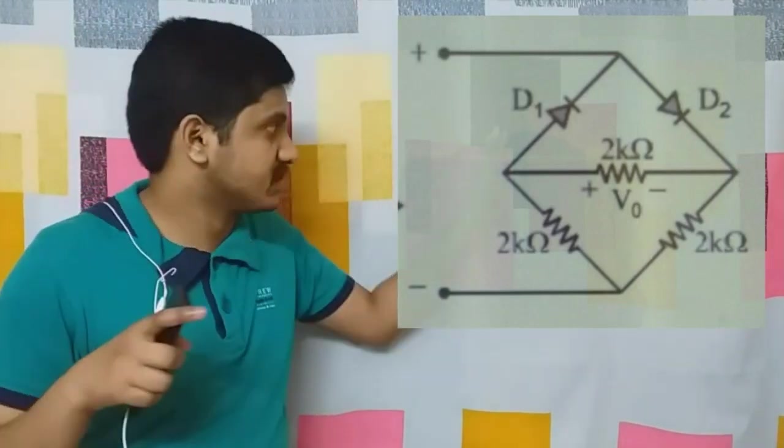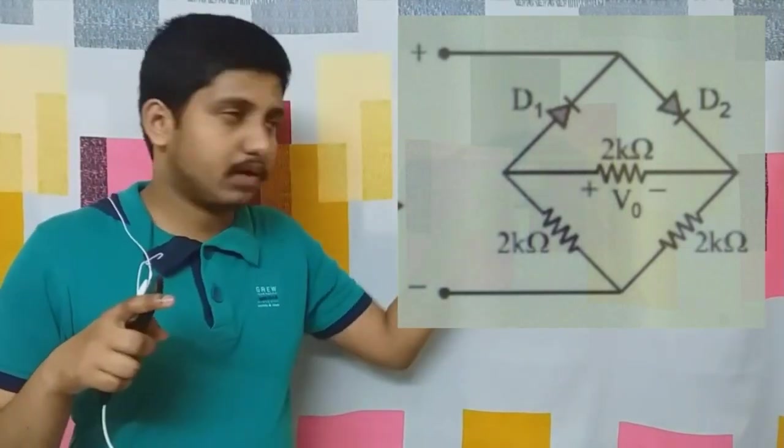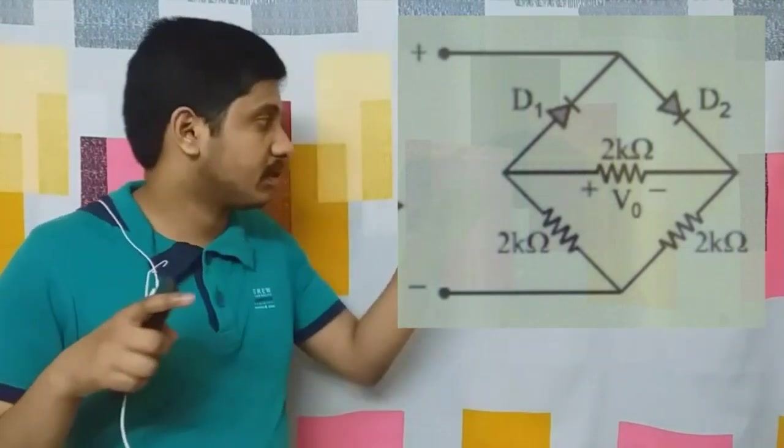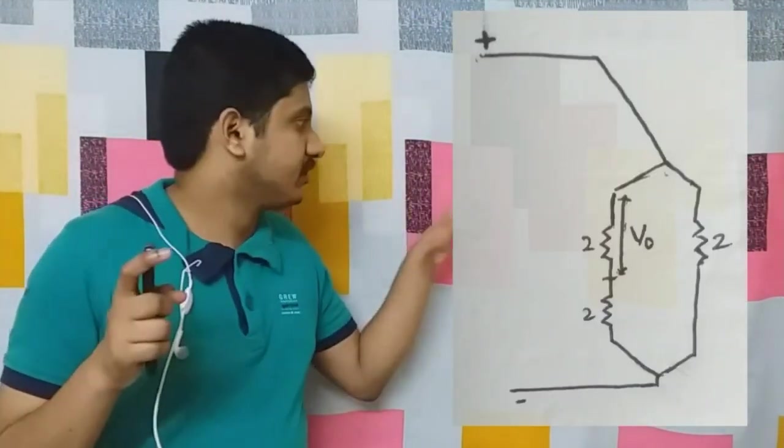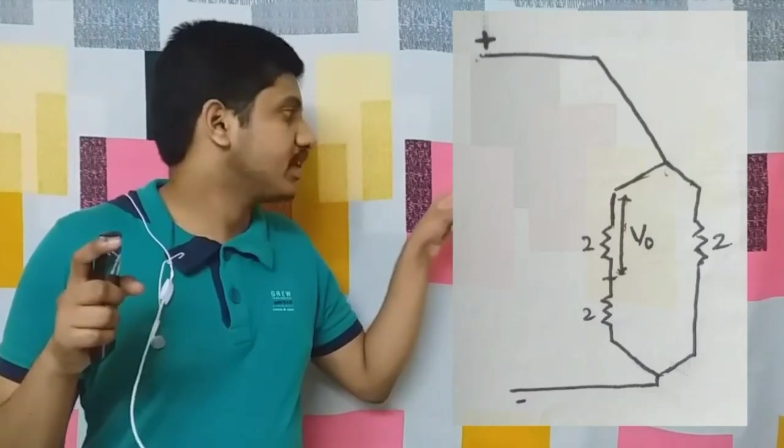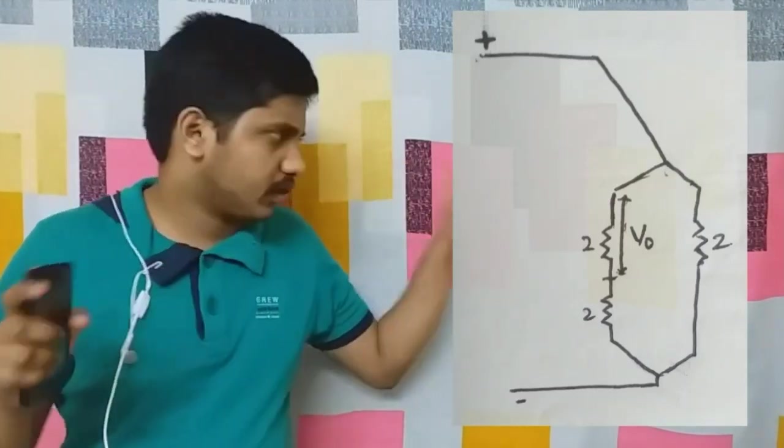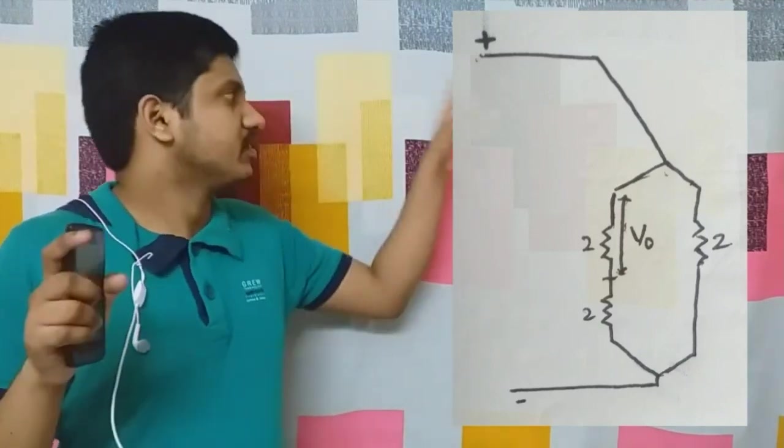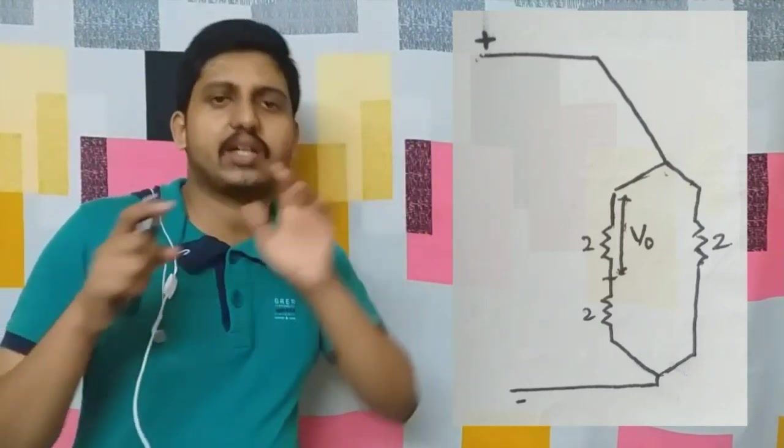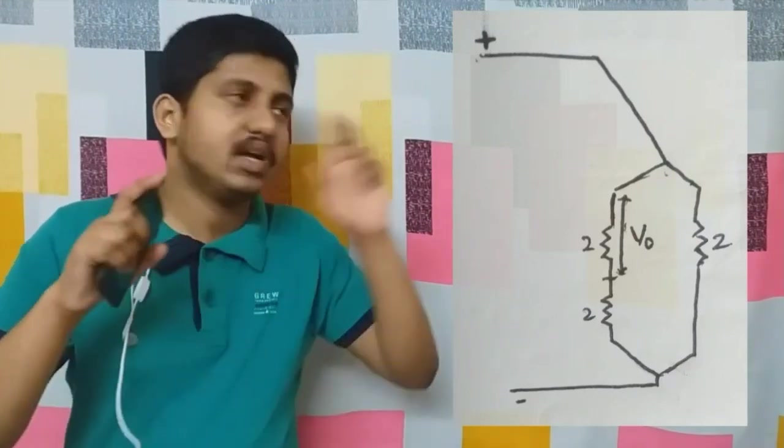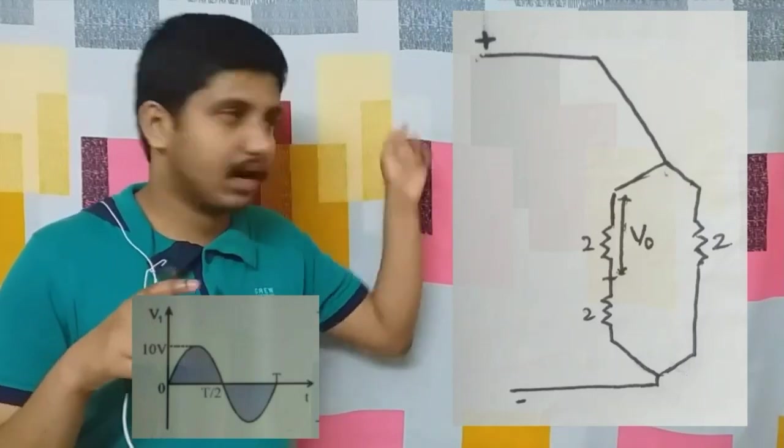Current flows through this path, so our circuit diagram becomes simplified. We have to find the output voltage across this 2 ohm resistor. You need not do much calculation. The total parallel combination has 10 volt voltage drop across it.